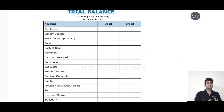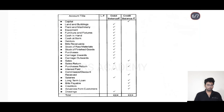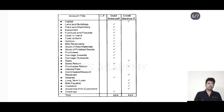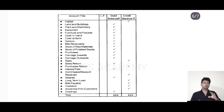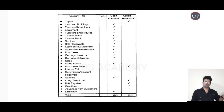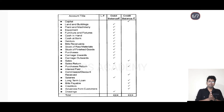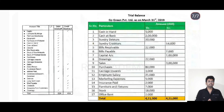Students, let's look at the trial balance format. The account title comes first, then the debit column and the credit column. For example: capital goes on the credit side. Land, building, plant, machinery, equipment, furniture, fixtures, cash in hand, and cash at bank — debtors, bills receivable, stock of raw materials — all these are assets and expenses and go on the debit side. Liabilities and income go on the credit side.